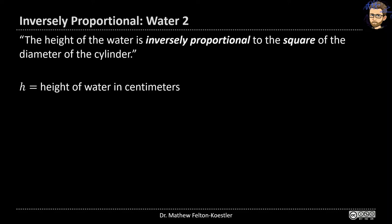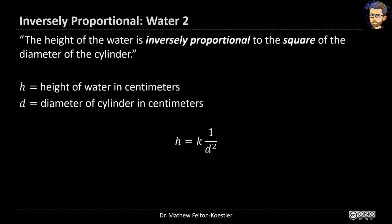You get excited and write a formula. Variables: h is the height of the water in centimeters, and d is the diameter of the cylinder in centimeters. Because the height is inversely proportional to the square of the diameter, it's not h equals k times d squared — instead it's h equals k times 1 over d squared, because the inverse part means we take the reciprocal, and the square comes from the square of the diameter. Cleaning it up: h equals k over d squared.